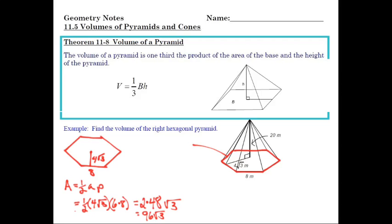And now I need the height. The height of the pyramid is 20. So my volume becomes one-third base area times height, which is one-third of 96√3 times 20. Plug through the numbers and you get 640√3. That's our exact answer. If you want an approximation, you plug it in a calculator and that will give you an approximation.